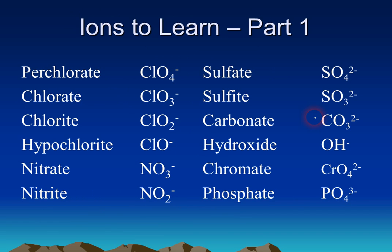You are going to have to learn some of these ions. You'll have a quiz over 12 ions — perchlorate all the way down through phosphate. The quiz format will be similar to the names and symbols of elements quiz earlier in the year: on half I'll give you the name and you write the formula, on the other half I'll give you the formula and you write the name. You might want to develop some flashcards or another method to learn these 12 ions.